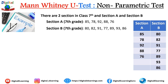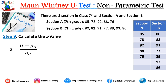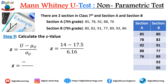Step 9: calculate the Z value. The formula is Z = (U − μ_U) / σ, where U is the Mann-Whitney statistic from Step 6, μ_U is the mean from Step 7, and σ is the standard deviation from Step 8. Plugging in all values, we get a Z value of approximately −0.568.